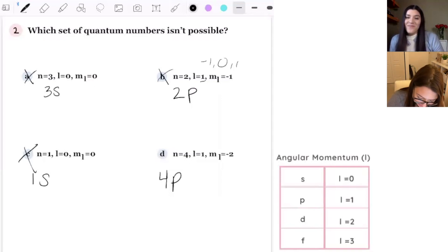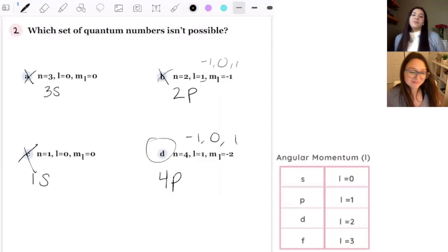Because it would be negative 1, 0, 1. So there's no negative 2. Exactly. That's the reason. Okay. So that's it. And the next one.